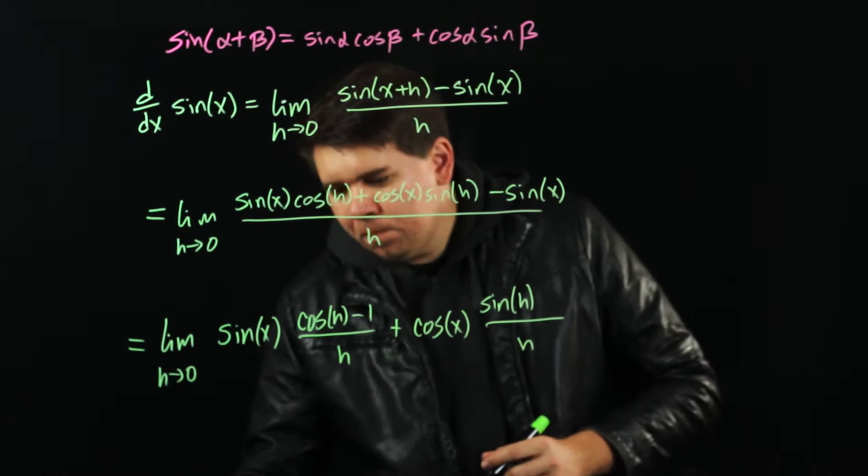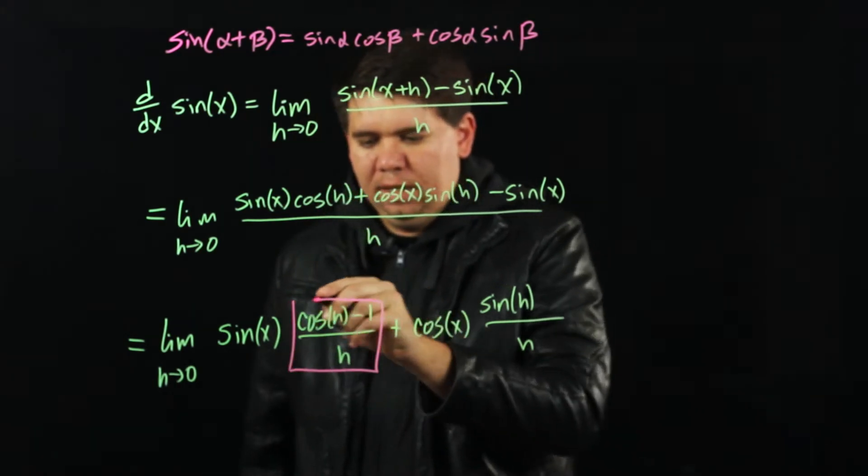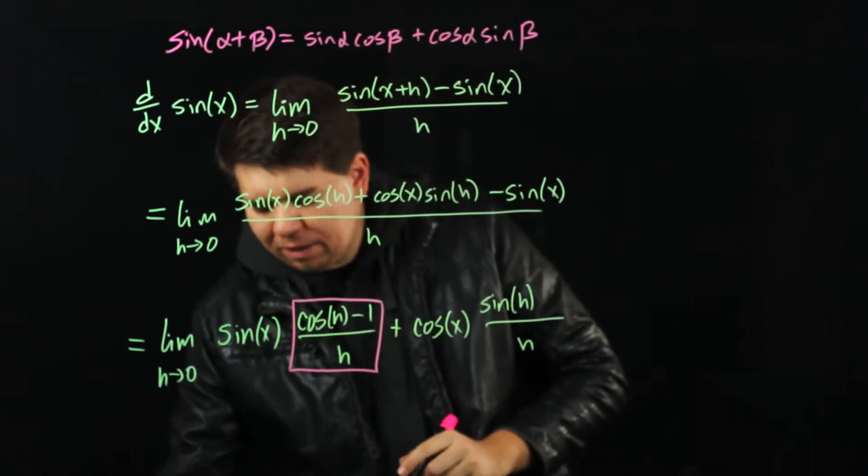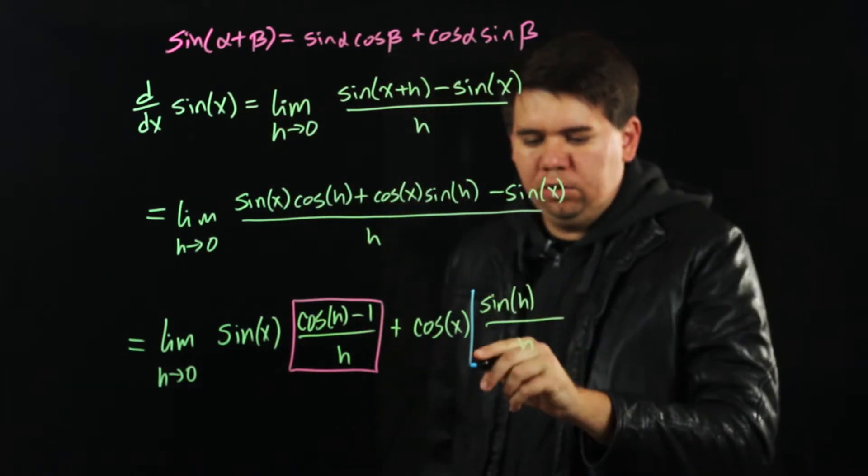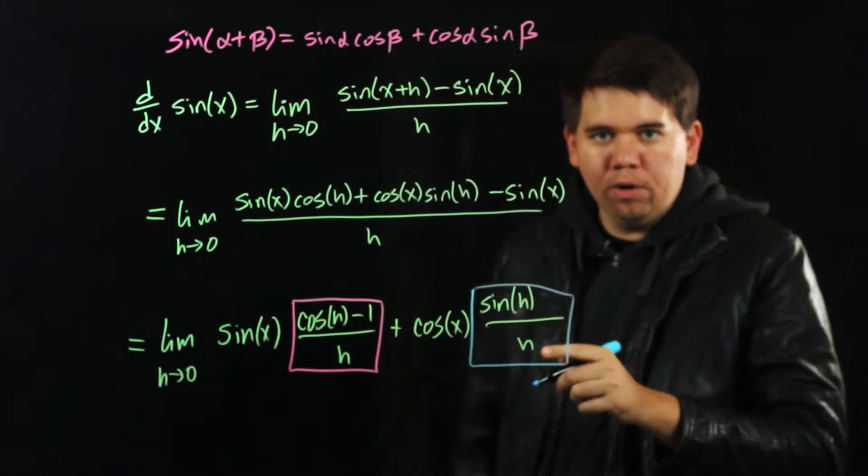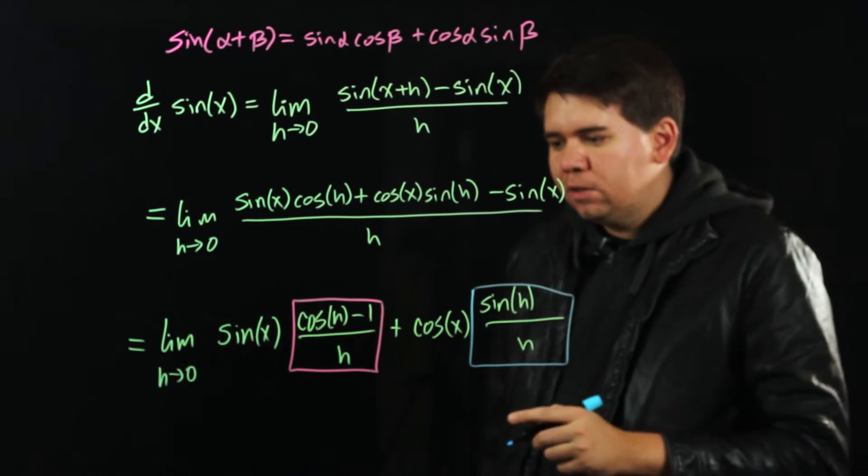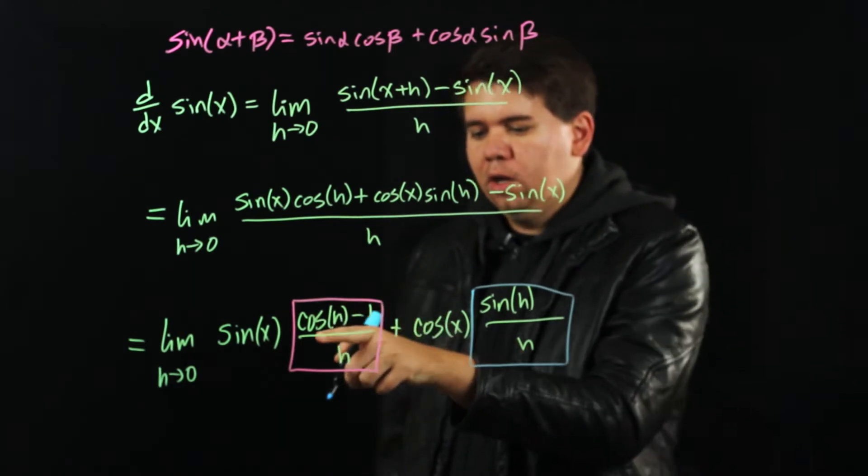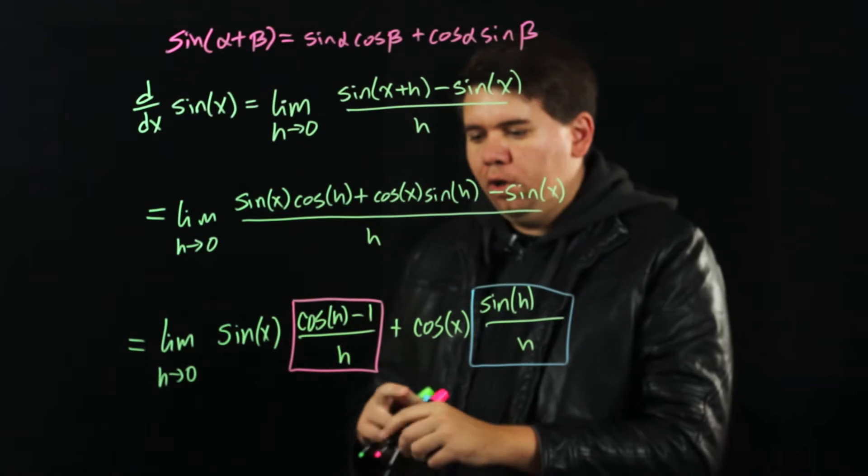What we want to do is we want to think about these two terms a little bit. Can we do any kind of algebraic trick to avoid getting 0 over 0? So let's first think about cosine of h minus 1 all over h.